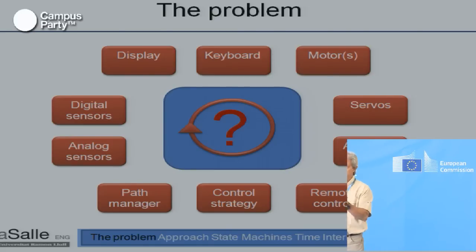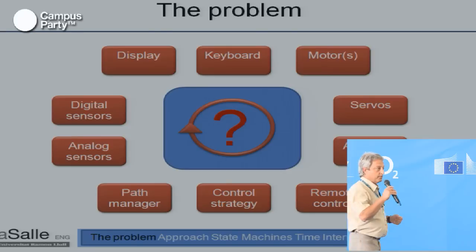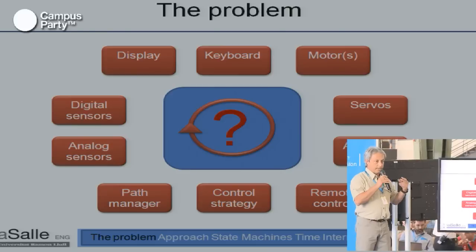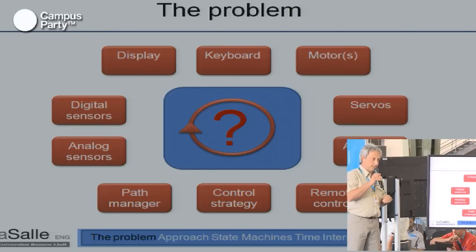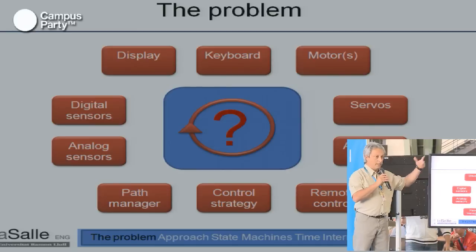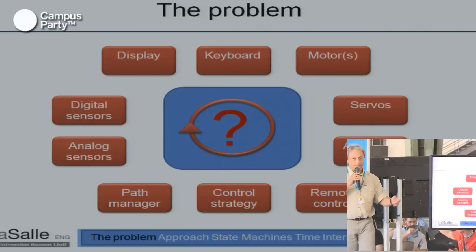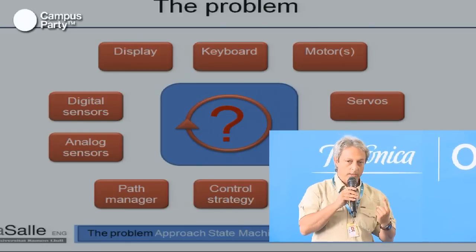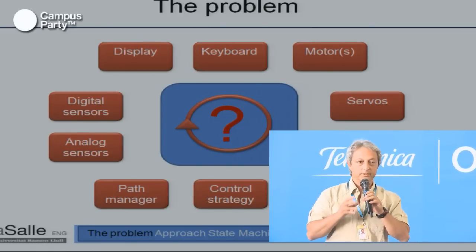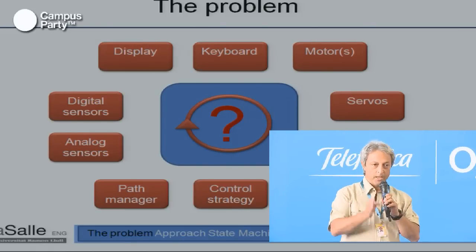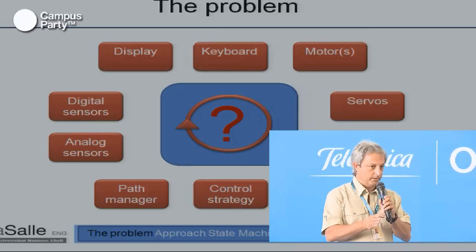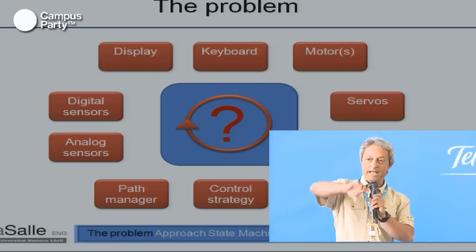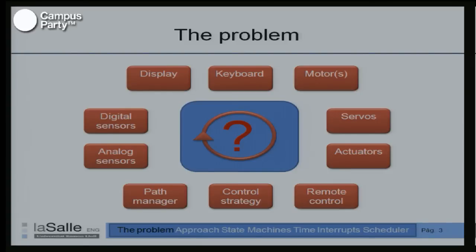It's easy if we have an operating system underneath. The operating system allows us to program a thread for every single task — a thread for the display, another for the keyboard, another for the motors, etc. But we have only one processor. The operating system has a periodic interrupt called a dispatcher. The dispatcher interrupts one task, saves the context, and switches to another task.